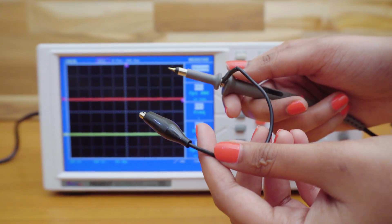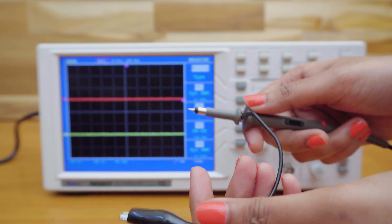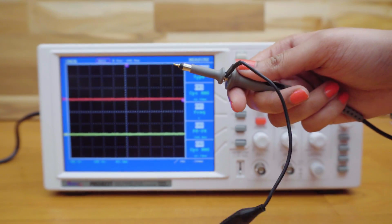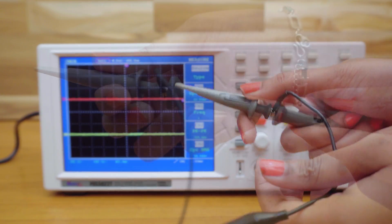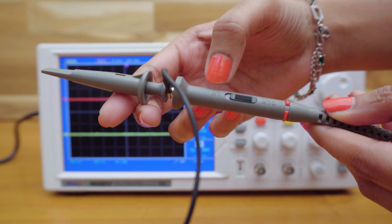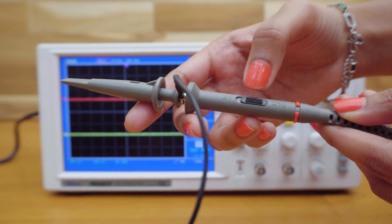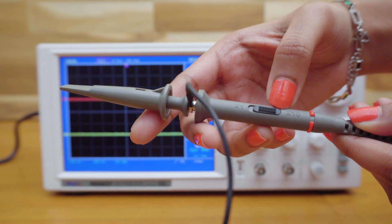Here's the oscilloscope probe. The black clip is the ground terminal and this one's the input probe. I'll be using this extension of the clip for convenience. It has a 10x and 1x switch. 1x can be used to measure very small signals with more accuracy.